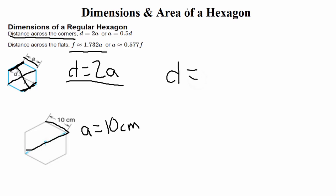Alright, so we can take D, that's what we're solving for. We're going to take 2 and multiply it by A. A is 10 in our example, so this is just a matter of calculating 2 times 10. So that means the distance across the corners would be 20 centimeters.